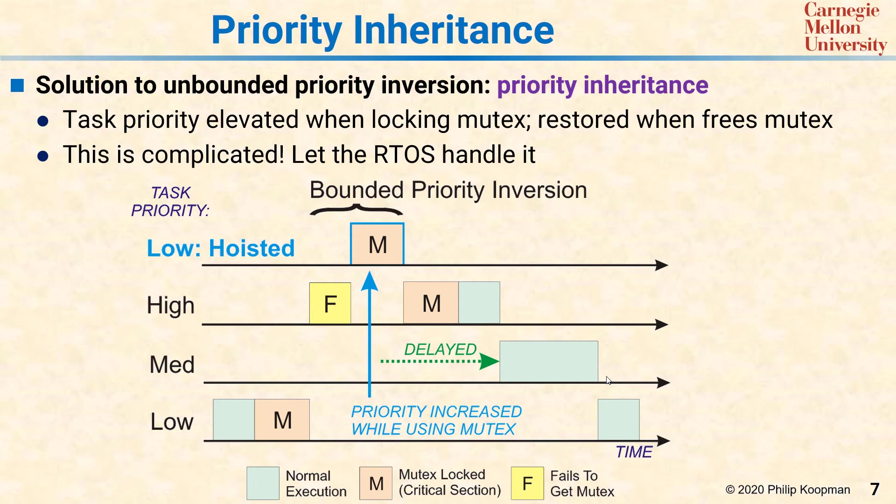Eventually, when the high priority task is done, the medium priority task gets to run, and then we go back to the low priority task when both of those are done.